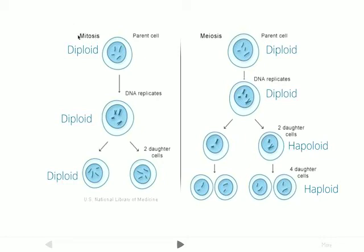In mitosis, we start out with a parent cell. That parent cell goes through interphase — G1, S, and G2 — and when it comes out of interphase, it's going to have its DNA already copied. Notice that both of these cells have four chromosomes in them, whether they're a line (an individual chromosome) or an X (a duplicated chromosome), and they both count as one chromosome. So we have one, two, three, four — that's a full set, so those are both diploid cells.